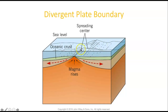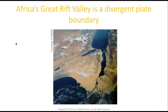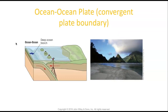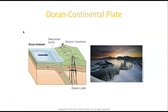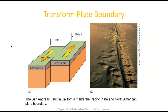Here's the divergent plate boundary — magma rises up, spreads out, and you get new oceanic crust. Africa's Great Rift Valley is an example of a divergent plate boundary. Then there's the ocean-to-ocean plate boundary, where one will subduct under the other and create the deep ocean trench. Next is continental-continental convergence, where neither plate goes under the other, so you get crashing and pushing up of the continents to form mountains. And in an ocean-continental plate scenario, the one without a continent will submerge and create another deep ocean trench. Here is the transform plate boundary — a picture of the San Andreas Fault in California, marking the Pacific plate and the North American plate rubbing against each other.